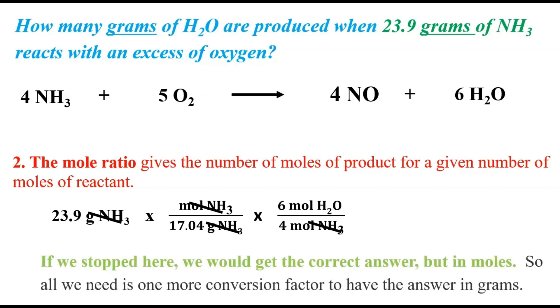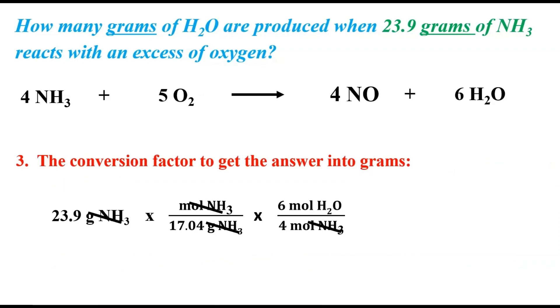If we stopped right here, we would actually get the correct answer, but it would be in moles. So all we need, really, is one more conversion factor so we can convert moles of water into grams of water. The last one is the conversion factor we get so we can get the answer into grams, and we have the moles of water canceling out and giving us grams of water. That 18.02 is the number of grams of water per mole. Then all we have to do is do the math, multiply across the top, multiply across the bottom, take the ratio, and we end up getting 37.9 grams of water. And this is a fairly representative stoichiometry problem.